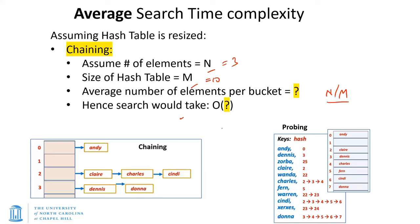The next question is: how long would a search take? When doing hashing, we first calculate the hash function, which takes constant time — O(1). Then we get to that particular location and must traverse the chain, the linked list, to find our element.